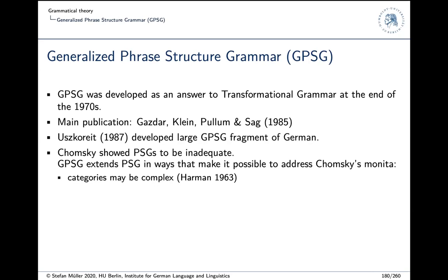The starting point of transformational grammar was that Chomsky showed that phrase structure grammars are not adequate — you cannot capture certain generalizations like the connection between active and passive. GPSG showed that if you assume certain extensions to phrase structure grammars, you can address the points Chomsky made. For instance, categories of node labels in trees may be complex rather than atomic — something already present in the introduction to phrase structure grammar with features, as Harman suggested in 1963.